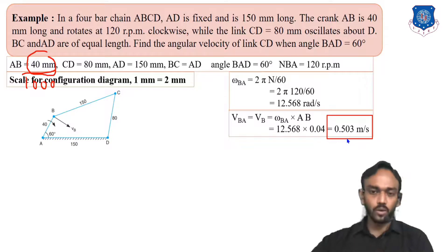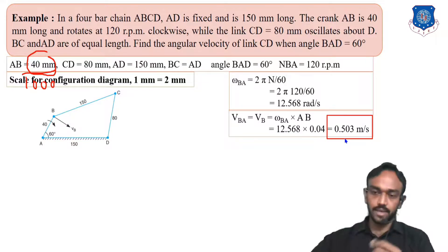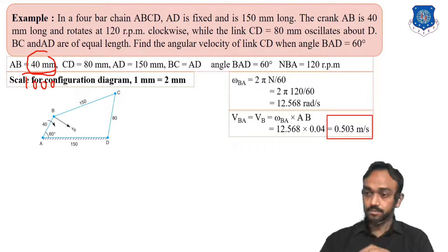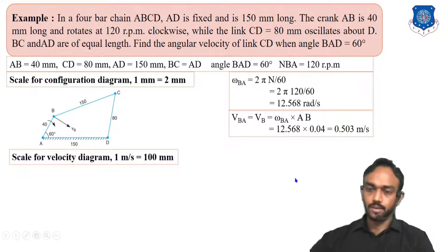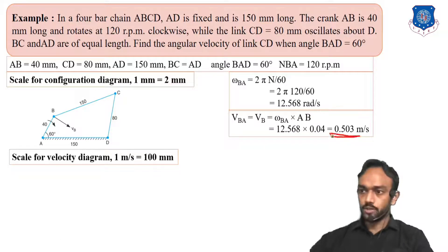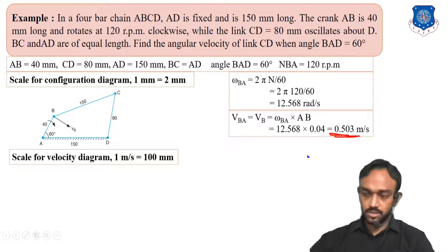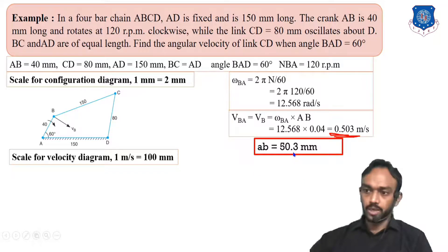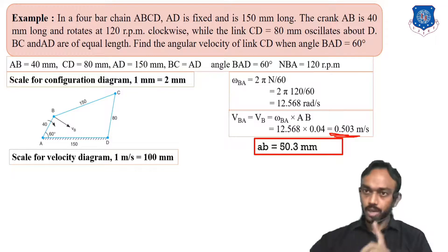Now we are going to draw this in a diagram, but 0.503 is a very small quantity — you can't draw 0.5 directly. So we have to enlarge the scale. We take the scale as 1 meter per second equals 100 mm. So 0.503 meters per second multiplied by 100 gives 50.3 mm. This is the length you will draw for the first velocity vector in the diagram.